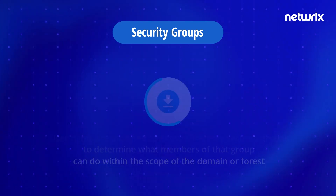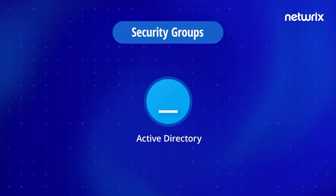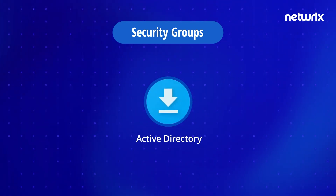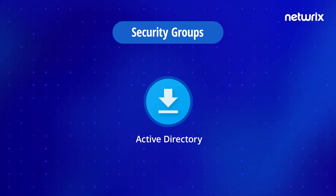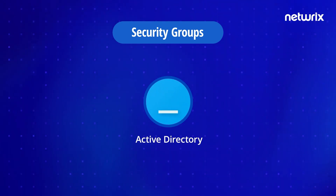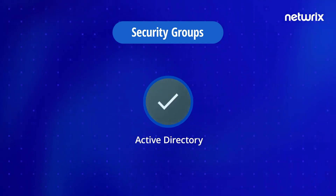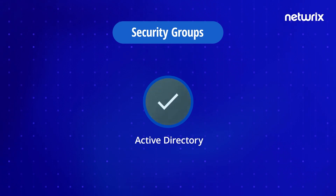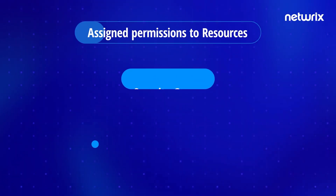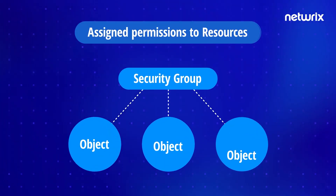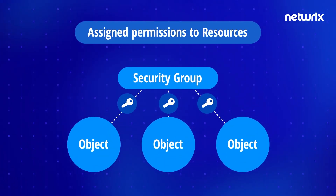User rights are automatically assigned to built-in security groups at the time Active Directory is installed to help administrators define a person's administrative role in their domain. Permissions are assigned to the security groups in Active Directory for shared resources.